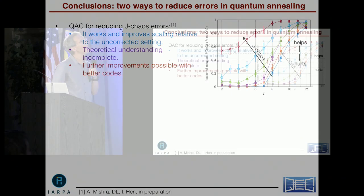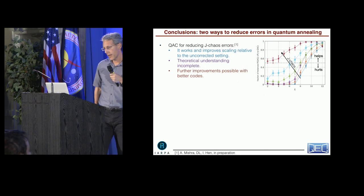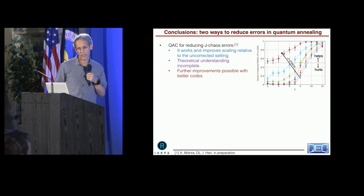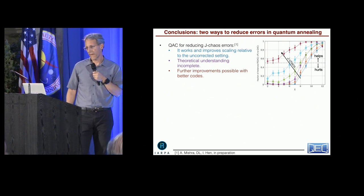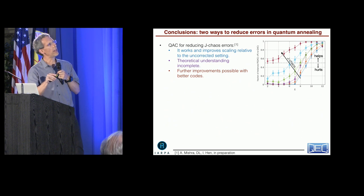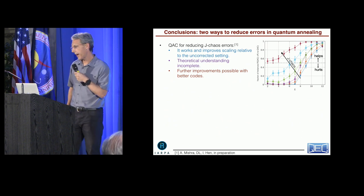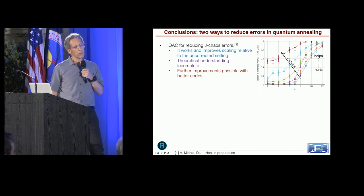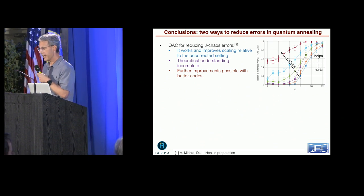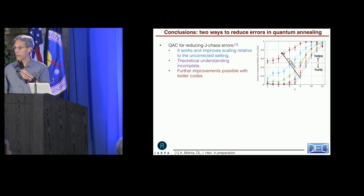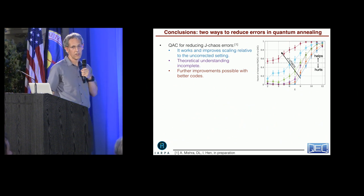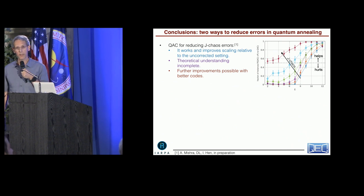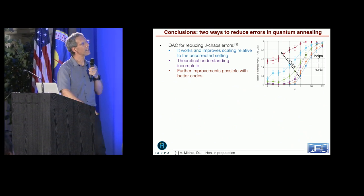I told you about two topics. The first is how to reduce J-Chaos. And I showed you that quantum annealing correction in its simplest incarnation works in this context, at least up to the sizes that we were able to check. It actually improves the scaling relative to the uncorrected case. We don't currently have a theoretical understanding of why it works. And that's an open problem. So if anybody has any ideas and wants to talk about it, I'd be very happy to do that.